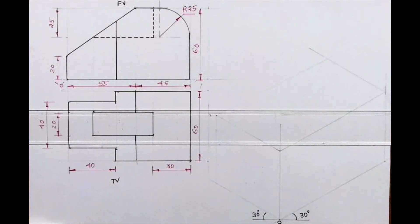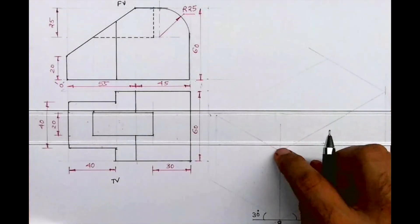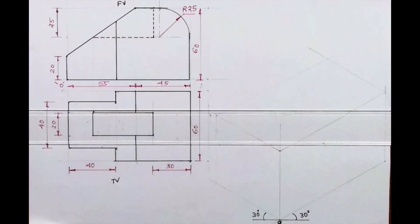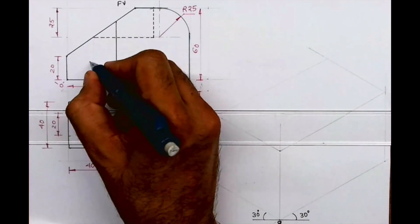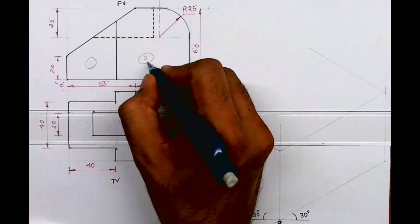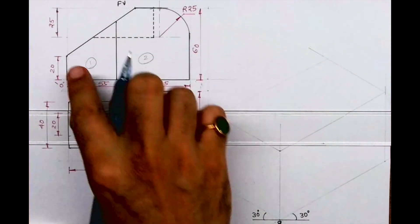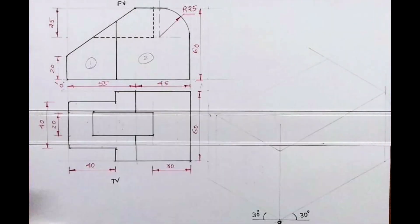We'll take 55 plus 45, that is 100 on the right side, 60 vertical and width 60. Now if you see this, the entire thing is in two parts. The front view is made up of two parts. The second part is nearer to you, but we can see the slope.